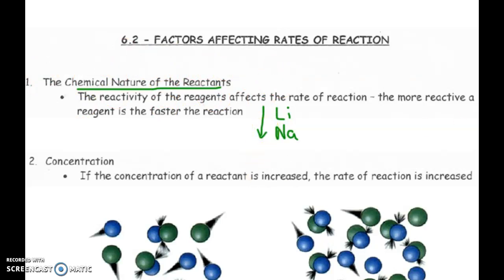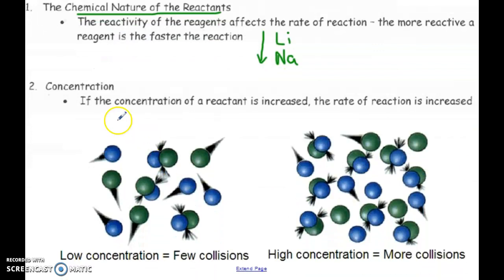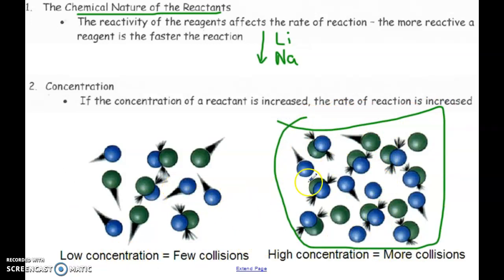Number two, concentration. So typically the higher the concentration of a reactant, the faster the rate will be. And that's simply because you are now increasing the number of collisions. So if we were to compare the left to the right, on the right-hand side, we have more green and blue atoms. So they're going to collide with each other more. So the chance of having a successful collision are automatically higher.